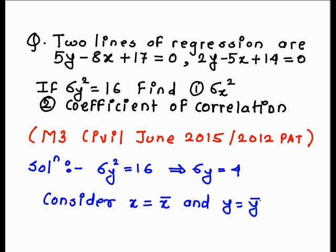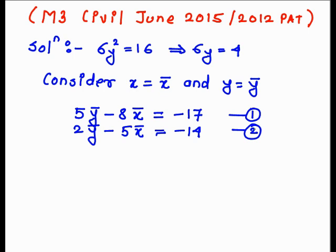So putting x equal to x bar and y equal to y bar into the given lines of regression, we get 5y bar minus 8x bar equals minus 17, equation 1, and 2y bar minus 5x bar equals minus 14, equation 2.